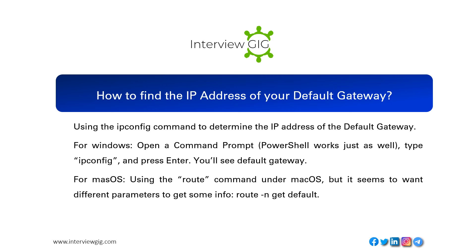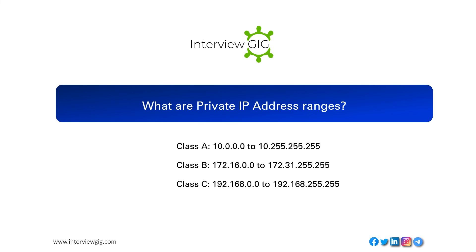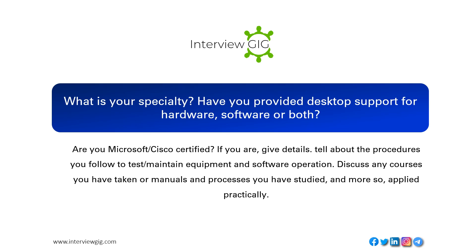What are the private IP address ranges? Class A: 10.0.0.0 to 10.255.255.255. Class B: 172.16.0.0 to 172.31.255.255. Class C: 192.168.0.0 to 192.168.255.255.